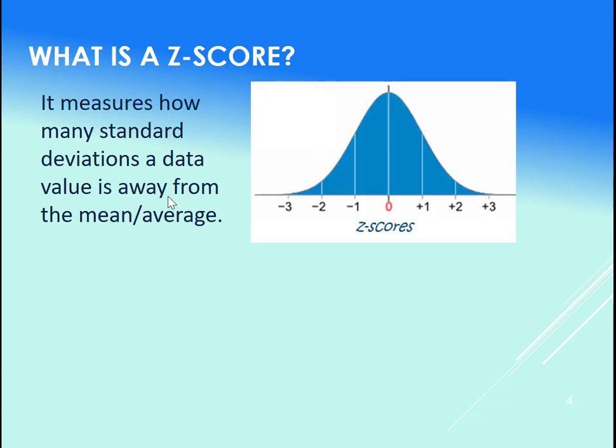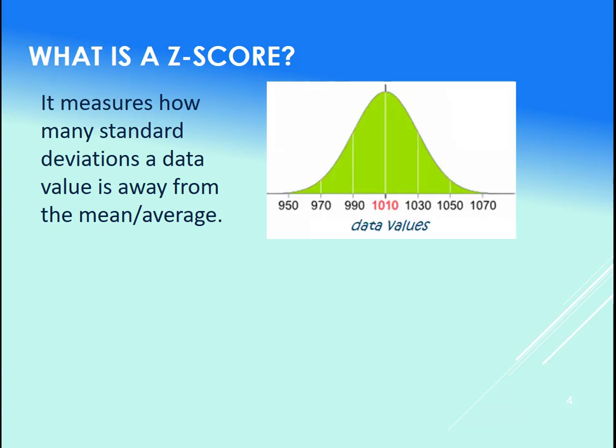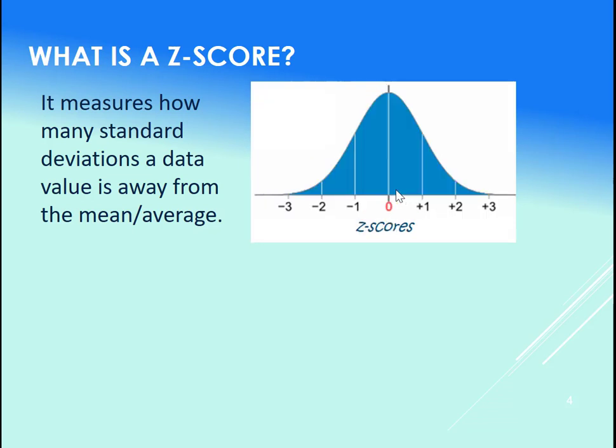Okay, and so of course you can take your data like this and you can calculate the z-scores for each. So this curve right here, or this data set, would look like this if we normalized it. Okay, if we put it in terms of its z-scores.